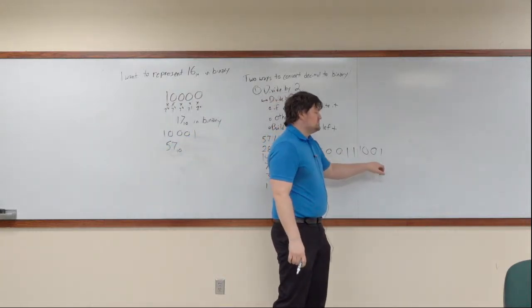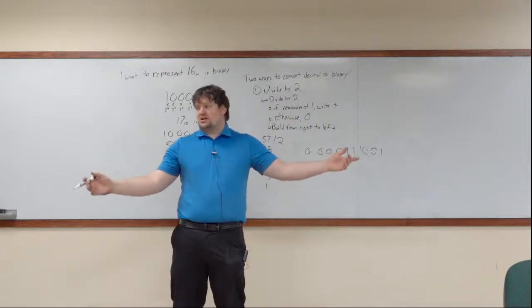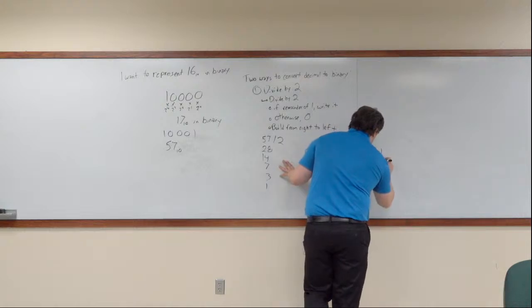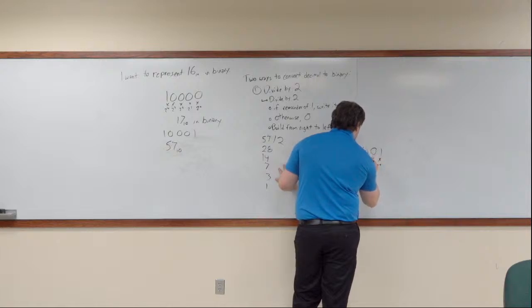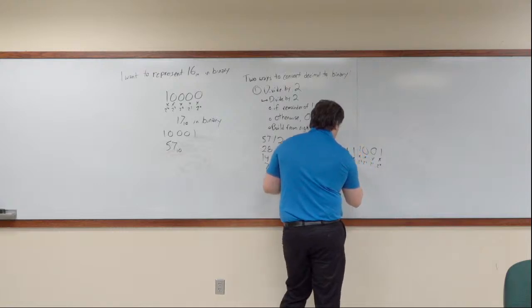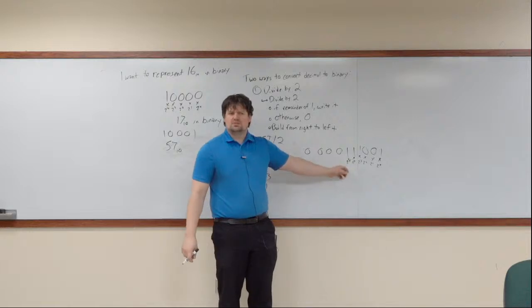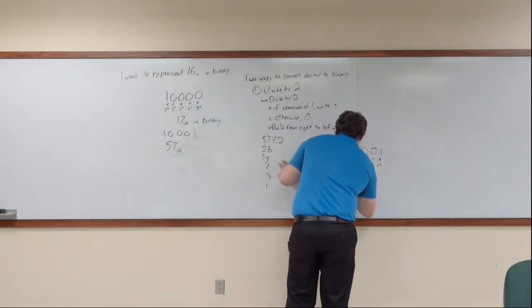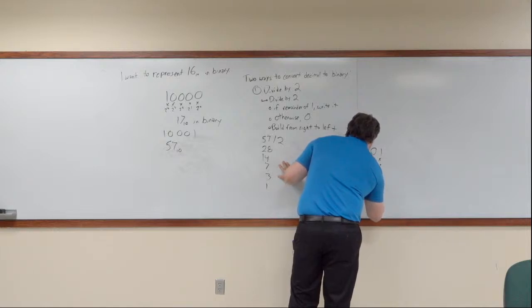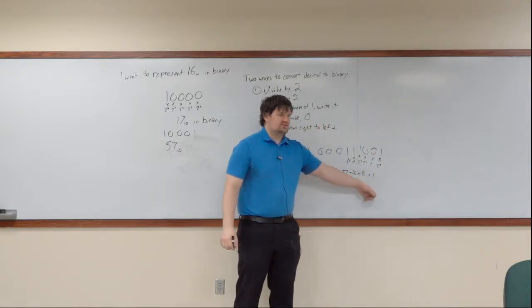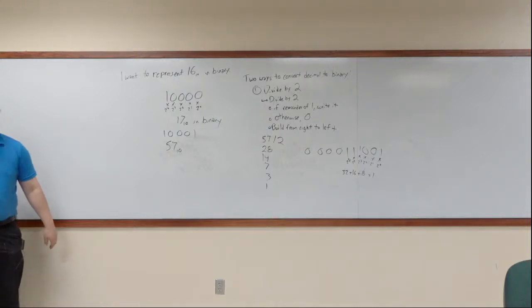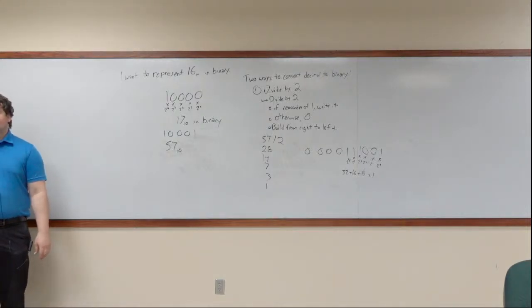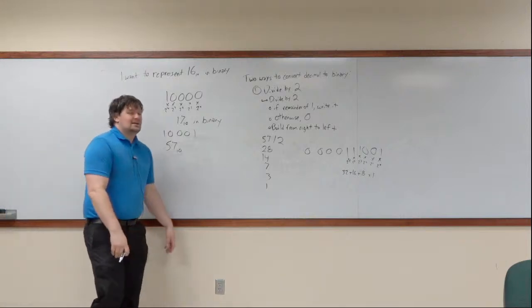So the way you represent 57 in binary using the divide-by-2 principle is 1,1,1,0,0,1. Let's check our work: this equals 1 plus 2 to the first, 2 to the second, 2 to the third, 2 to the fourth, times 2 to the fifth. 2 to the fifth is 32. So this is 32 plus 16 plus 8 plus 1, which is 48, 56, 57. Correct!